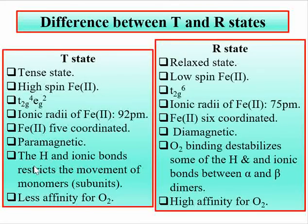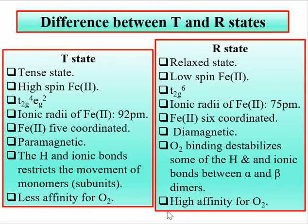In the T state, hydrogen bonds and ionic bonds restrict the movement of the monomeric subunits — the alpha and beta dimers. In the R state, oxygen binding destabilizes some of the hydrogen and ionic bonds between alpha and beta dimers, giving the R state a higher affinity for oxygen, while the T state has less affinity for oxygen.